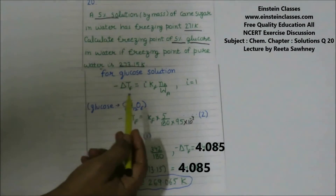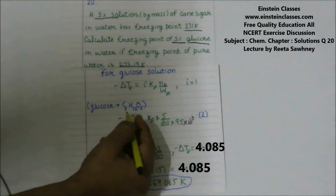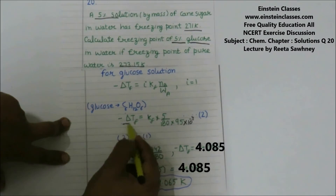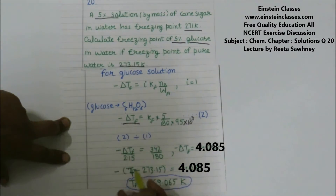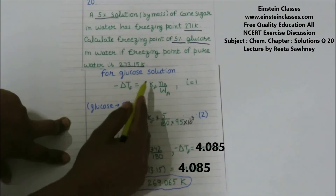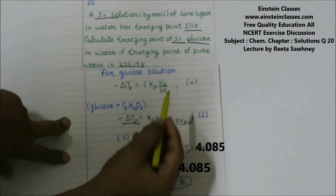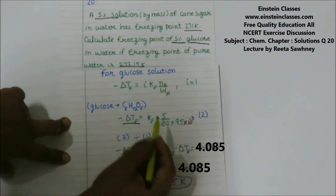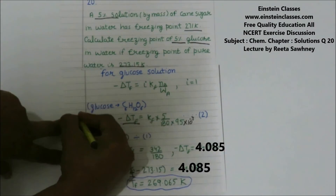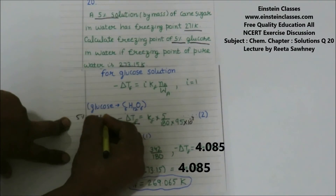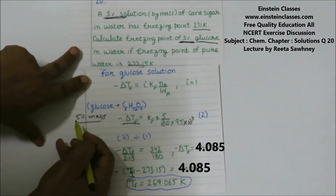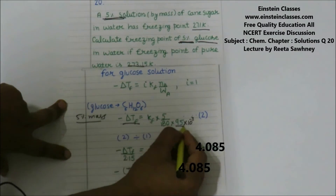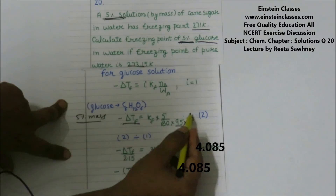For the glucose solution, we apply the same formula: minus delta Tf = i·Kf·m. Glucose has molecular formula C6H12O6 and molar mass 180 g/mol. The van't Hoff factor i for glucose is 1. Since it is also a 5% solution, 5 grams of glucose is present in 100 grams of solution, so the solvent mass is 95 grams.